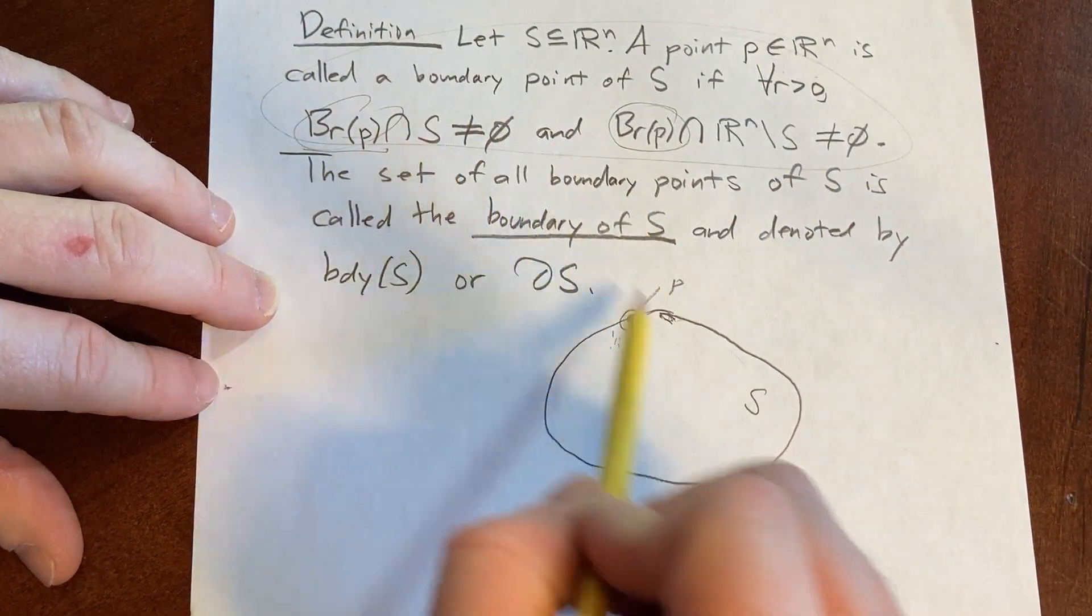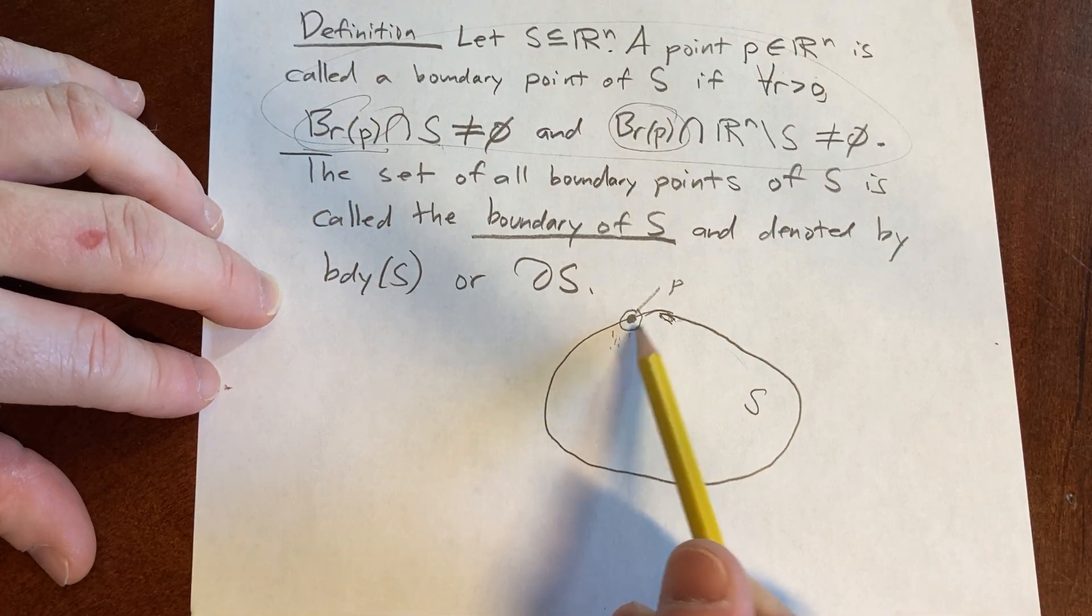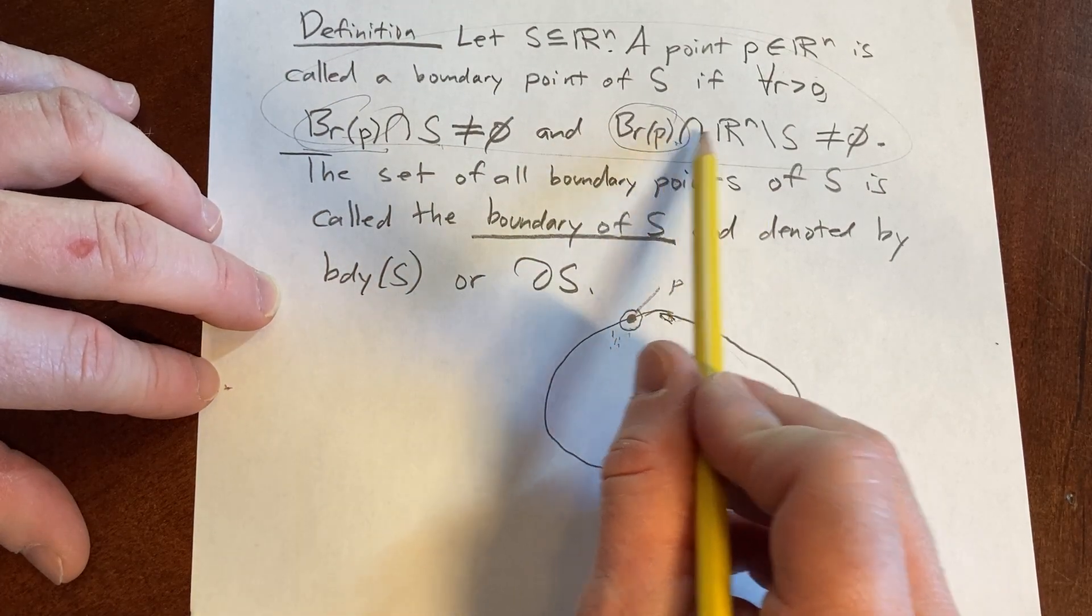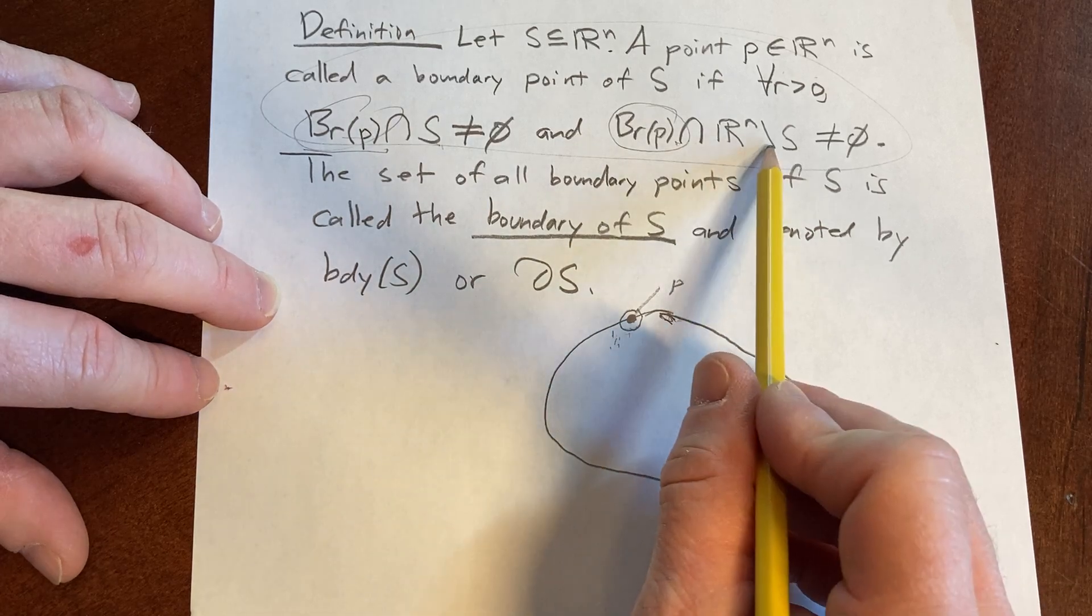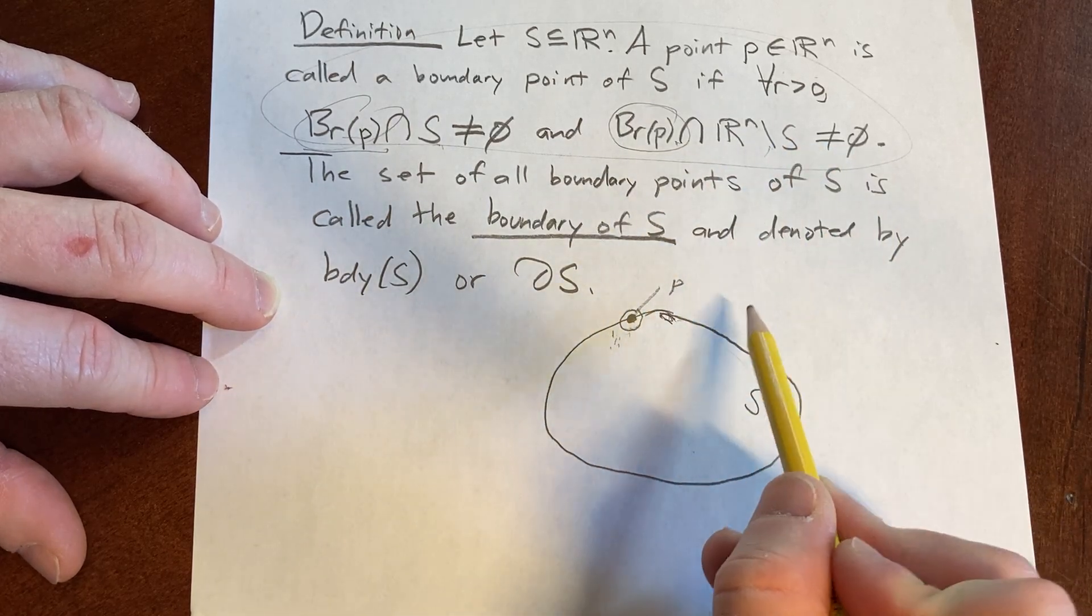And what this is saying is if I take the ball and I intersect it with S, it's not empty. What that means is there's some stuff over here in S. And if I intersect it with stuff outside of S, it also has to be not empty. There has to be some stuff here.